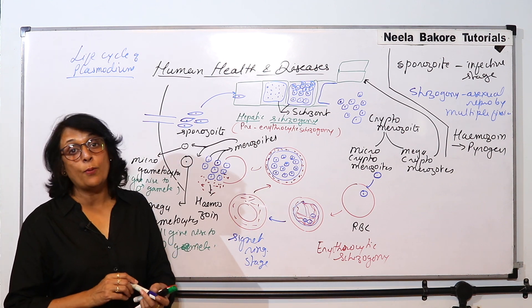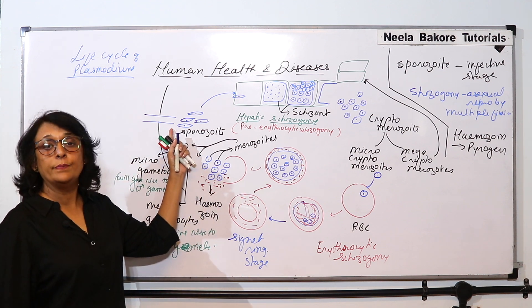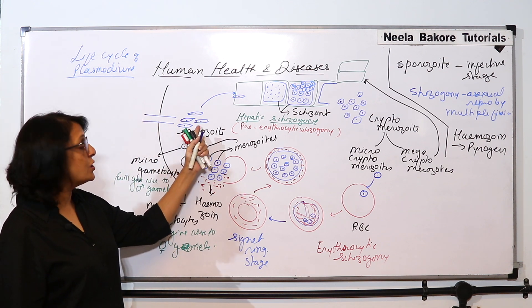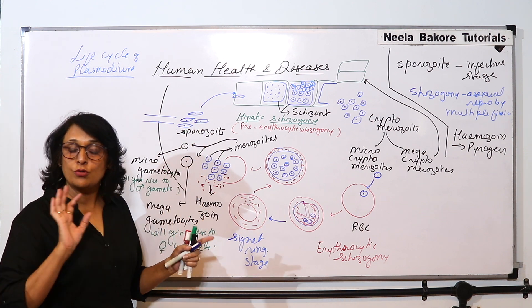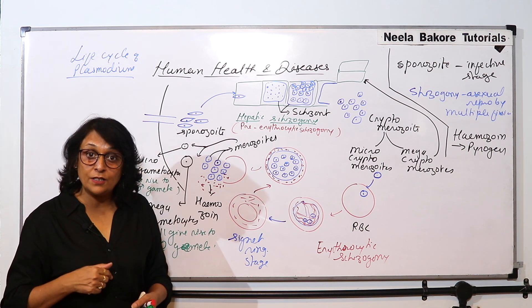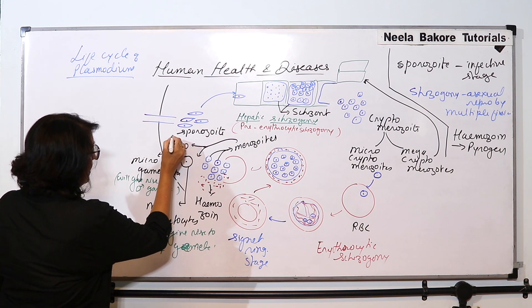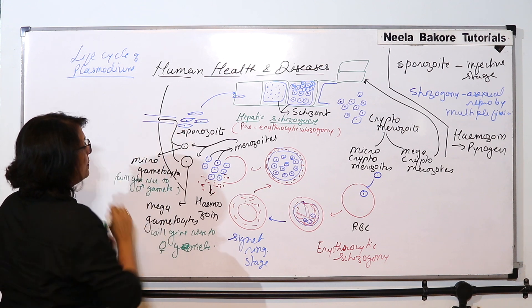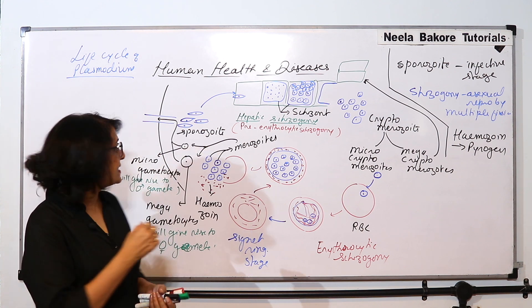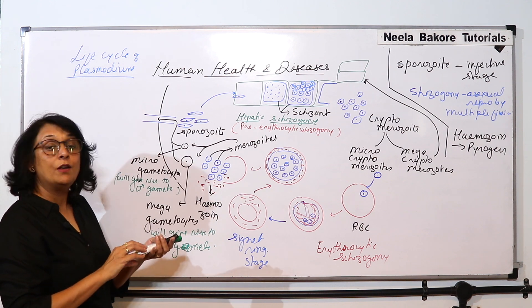Now at this time suppose another mosquito bites. What is the mosquito going to do? The mosquito is going to inject its saliva, and if that female Anopheles has the sporozoites then the sporozoites will be injected. But if the female Anopheles does not have sporozoites, then these gametocytes will be sucked in because the female Anopheles is going to suck the blood. So when the blood is sucked, the micro and macrogametocytes will be sucked in.